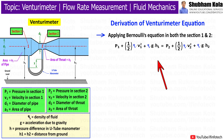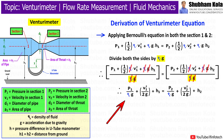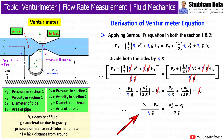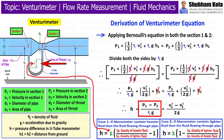Now applying Bernoulli's equation in both sections 1 and 2. Here H1 and H2 will be eliminated because both have the same height from the ground. I will rearrange the equation in order to get the term on the left-hand side, i.e., (P1 – P2) / ρg, which is the pressure difference and it is denoted by small h.